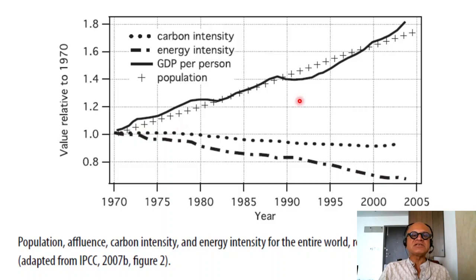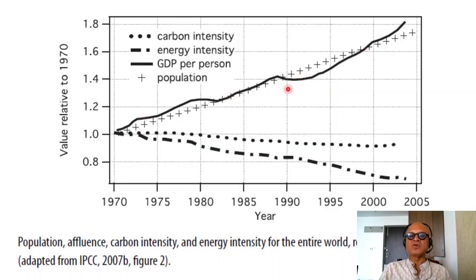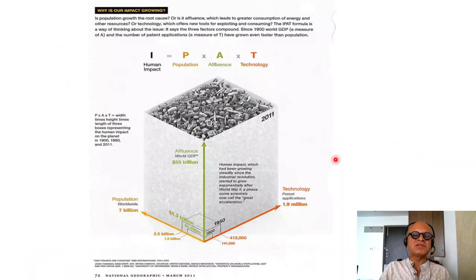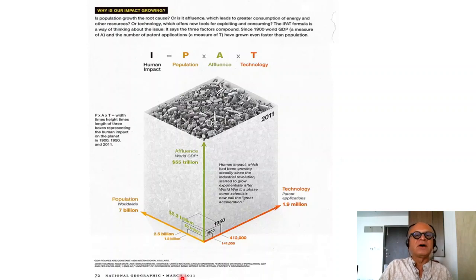Population has increased but the annual rate of population increase has dropped, and fertility rates have dropped even for China and India. GDP per person has grown because both population and GDP have grown. So is this good news? Not really, if you look at total emissions.